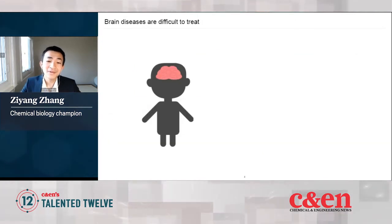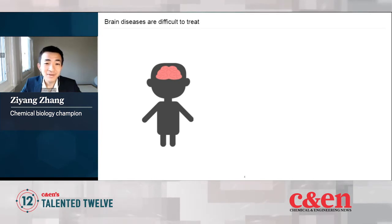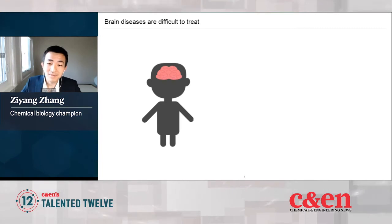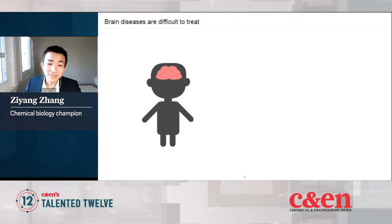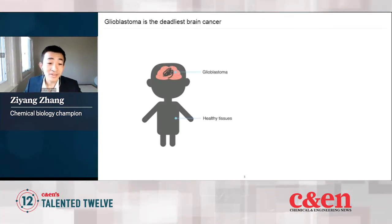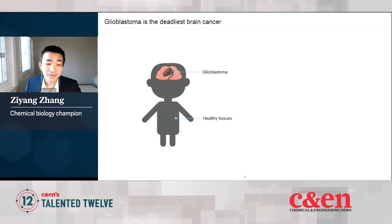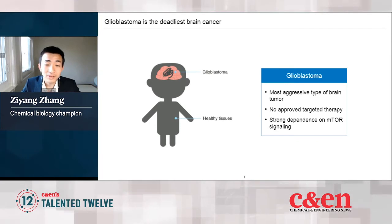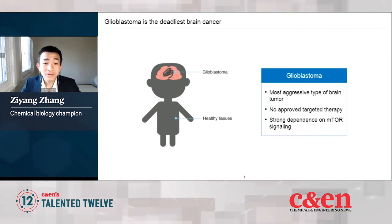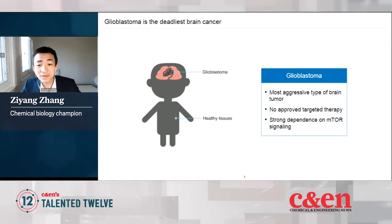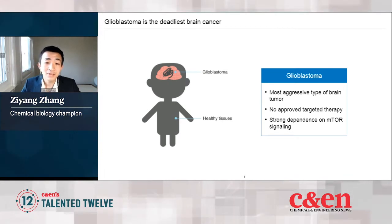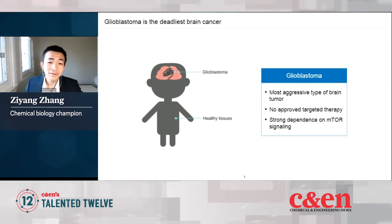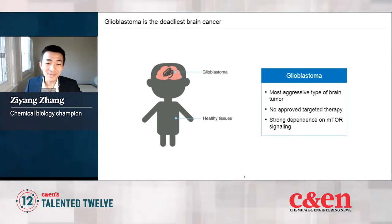Brain diseases can be very difficult to treat because of the unique function and anatomy of our brain. For example, glioblastoma is the most aggressive type of brain cancer, affecting tens of thousands of patients every year across the world. We don't have targeted molecular therapy for glioblastoma, and our current options are only limited to chemotherapy and radiotherapy.